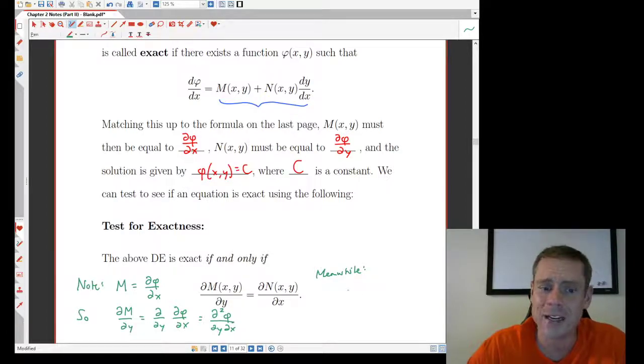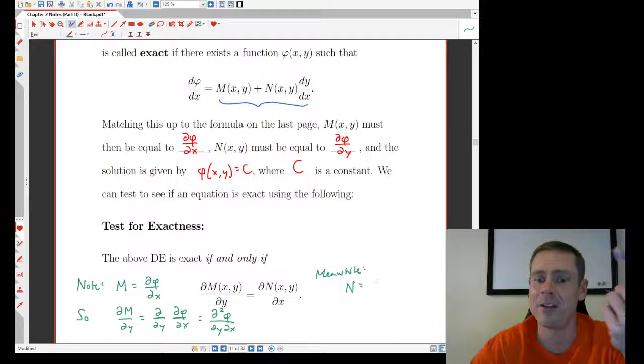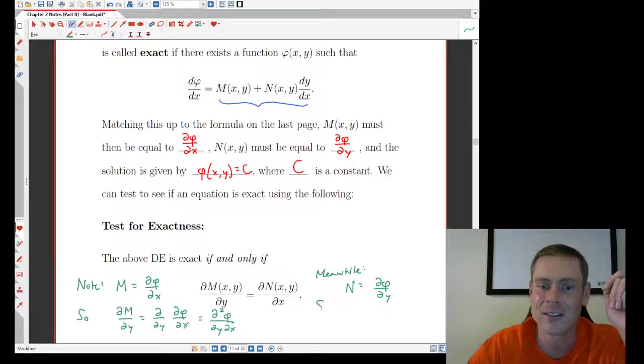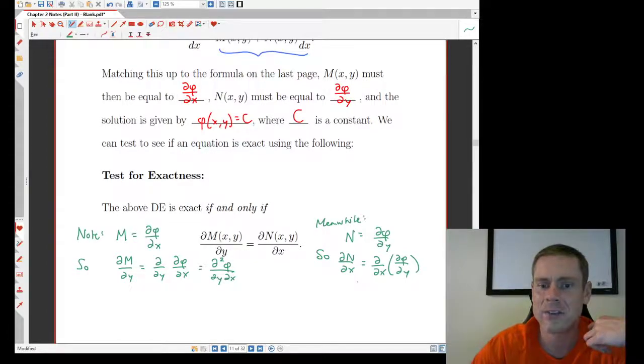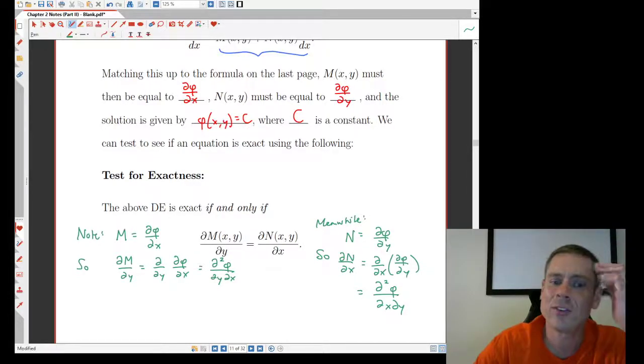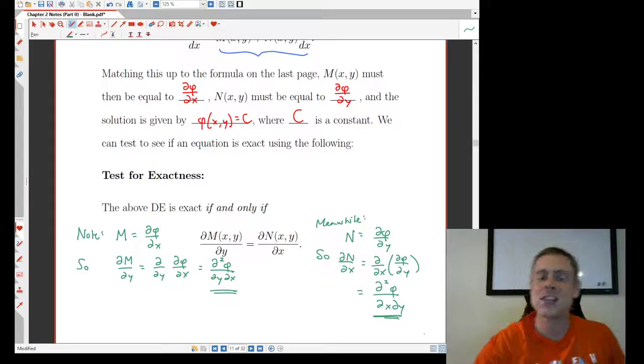Meanwhile, on the right here, N, we defined in the paragraph above as being ∂φ/∂y, if we match it up to the page before and so on. But in that case, if I'm using this test here, the x derivative of the N, the x derivative of the N is the x derivative of this thing. And that is going to be, that is going to be ∂²φ/∂x∂y. And so you see what this test is saying is, I want to make sure that this quantity on the left here is equal to this quantity on the right here.